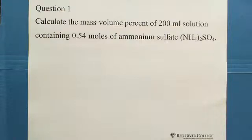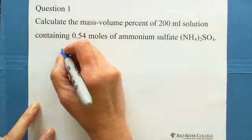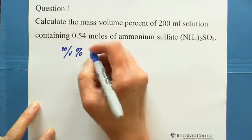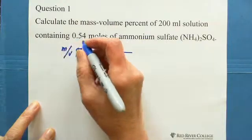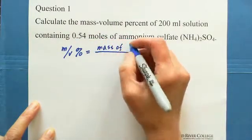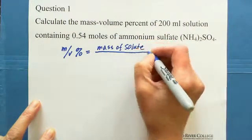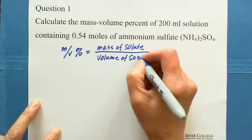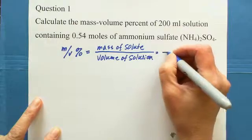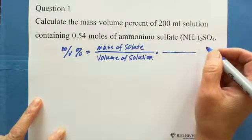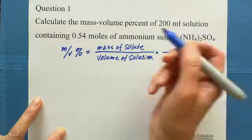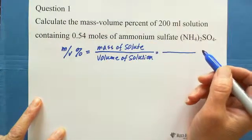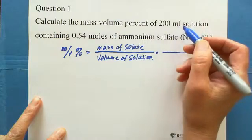This question is looking for the concentration in mass volume percent. The mass volume percent definition is the mass of solute over volume of solution. In this question, the mass of solute gave us nothing — just gave us 0.54 moles. The volume of solution is 200 milliliter solution.